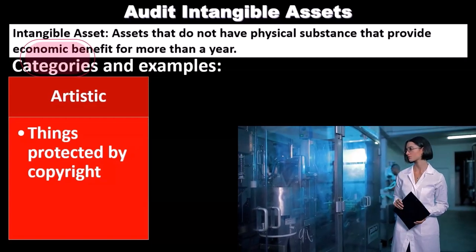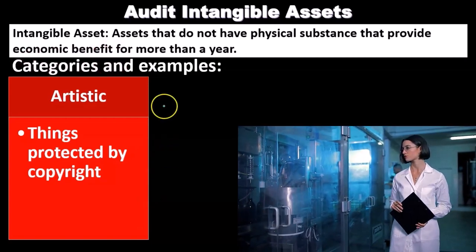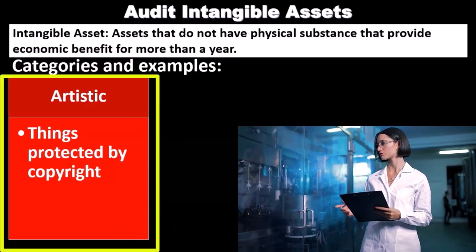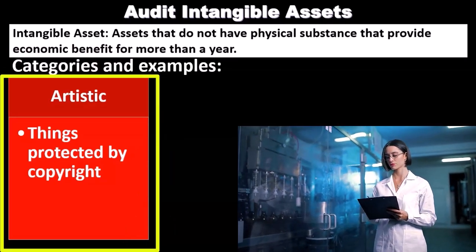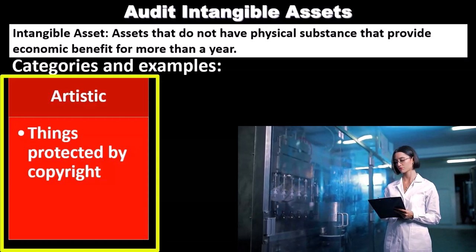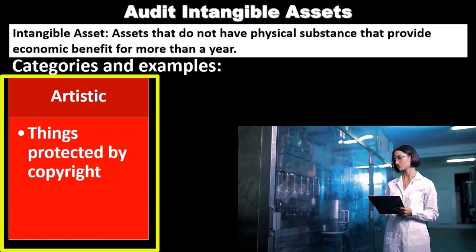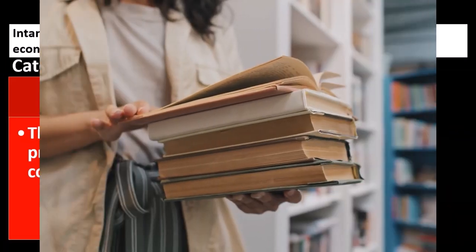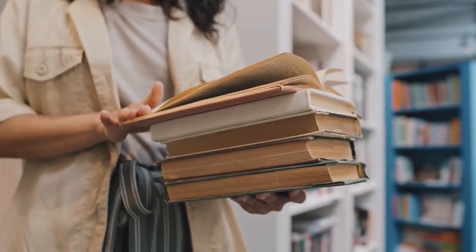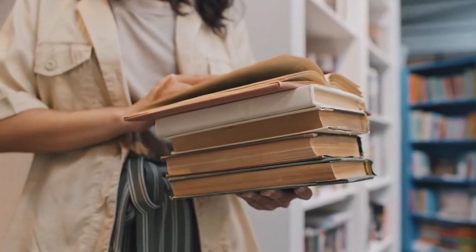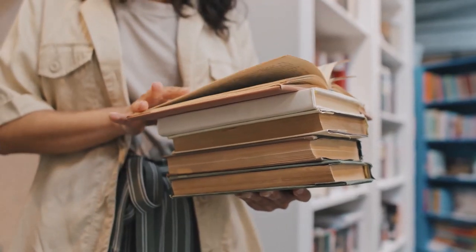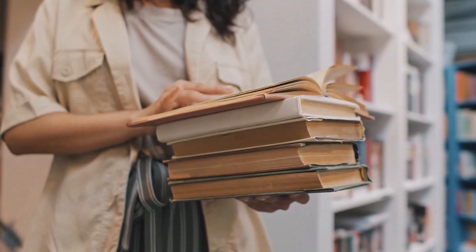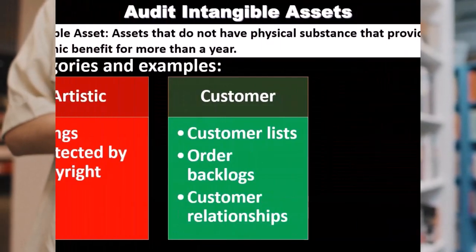Types of categories of intangible assets include artistic things — anything that has a copyright could be some form of intangible asset. Note that the copyright itself is the intangible asset. If we have a book or a painting, those are physical things, but the copyright is the claim to the material, the idea, the concepts — and therefore copyright items are intangible assets.